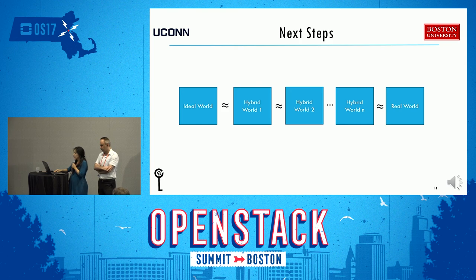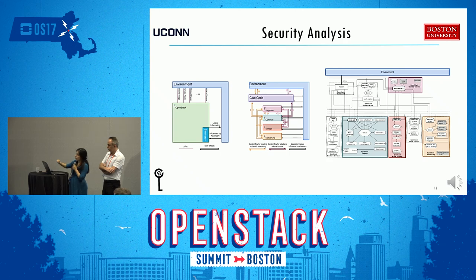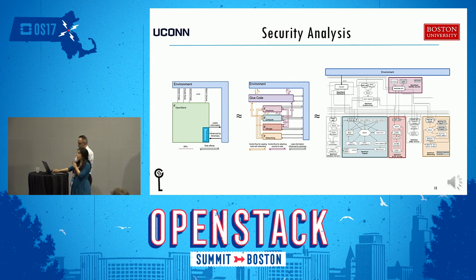Otherwise, we must provide some security solutions. As you can see, the step-by-step UC analysis involves the system bottlenecks and their issues. Here you can see the three worlds: the ideal one on the left, the hybrid one, and the real one. First, we have to show that the hybrid one realizes the ideal one. Then we have to show that the real world realizes the hybrid one.